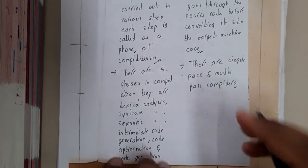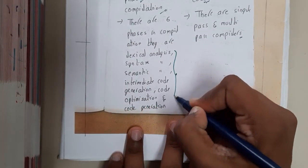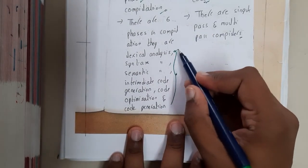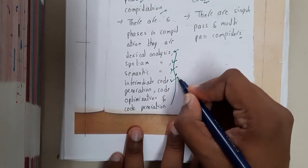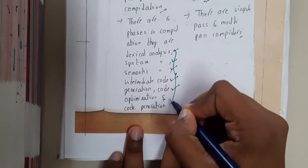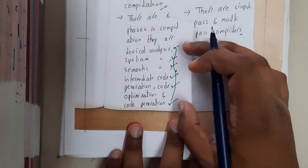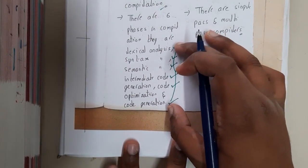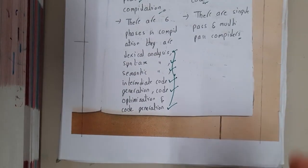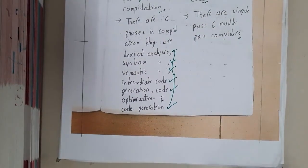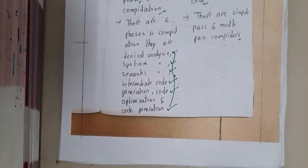There are six phases of a compiler: lexical analysis, syntax analysis, semantics analysis, intermediate code generation, code optimization, and code generation. We'll be discussing each of these in detail in the next lecture and later on in the subject as well, going through each and every topic in detail.